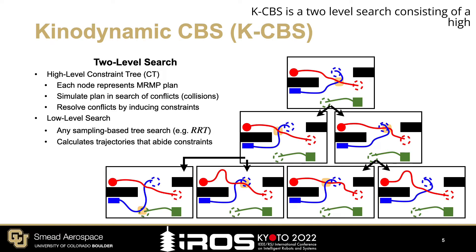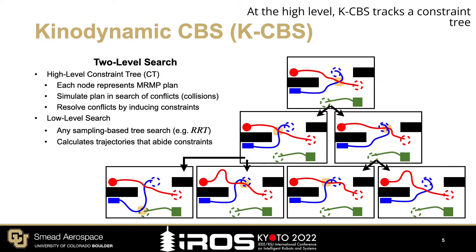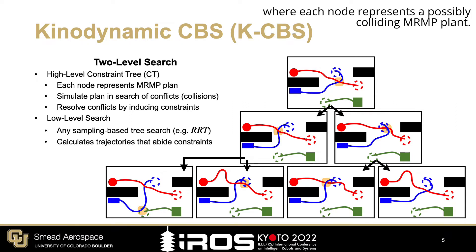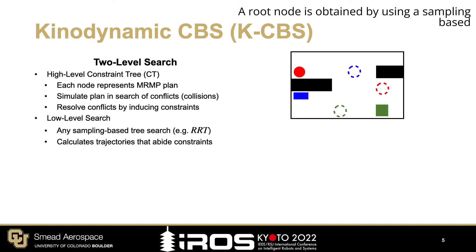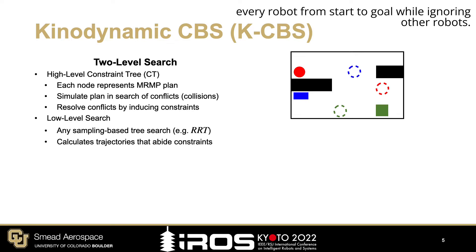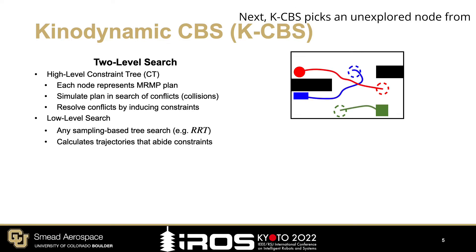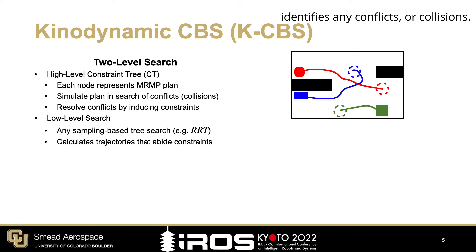KCBS is a two-level search consisting of a high-level constraint tree search and a low-level motion planner. At the high level, KCBS tracks a constraint tree, where each node represents a possibly colliding MRMP plan. A root node is obtained by using a sampling-based motion planner, such as RRT, to find a trajectory for every robot from start to goal while ignoring other robots. Next, KCBS picks an unexplored node from the constraint tree, simulates the plan, and identifies any conflicts.